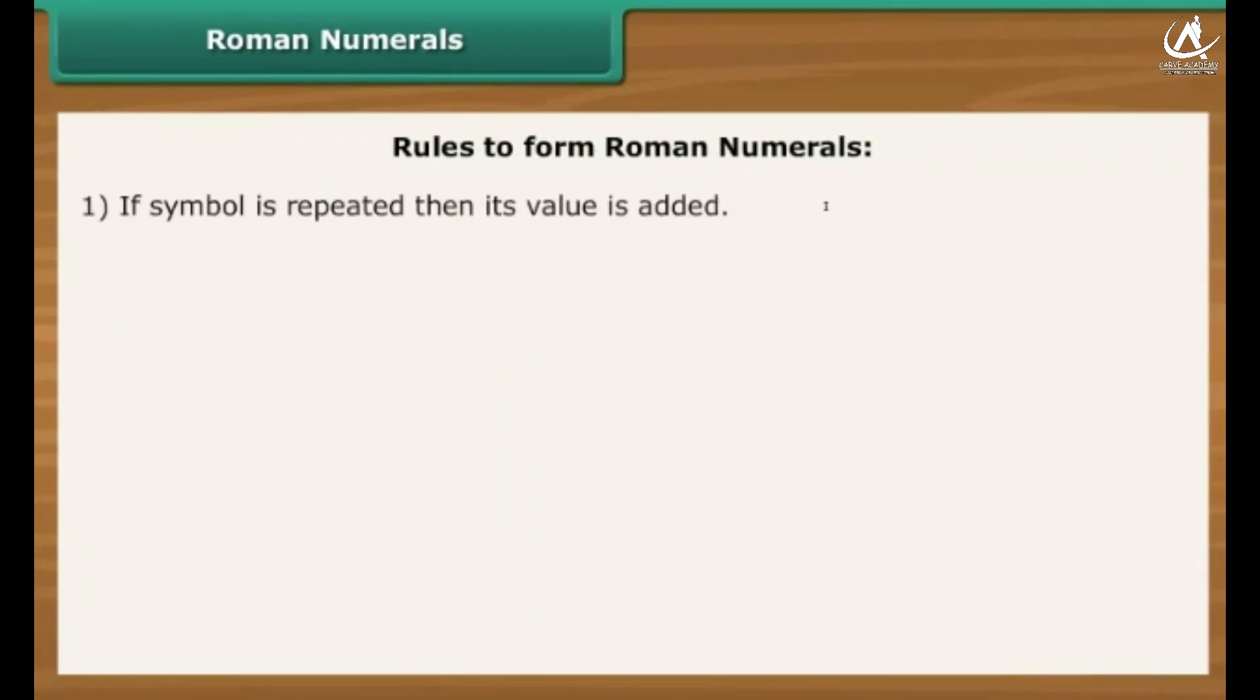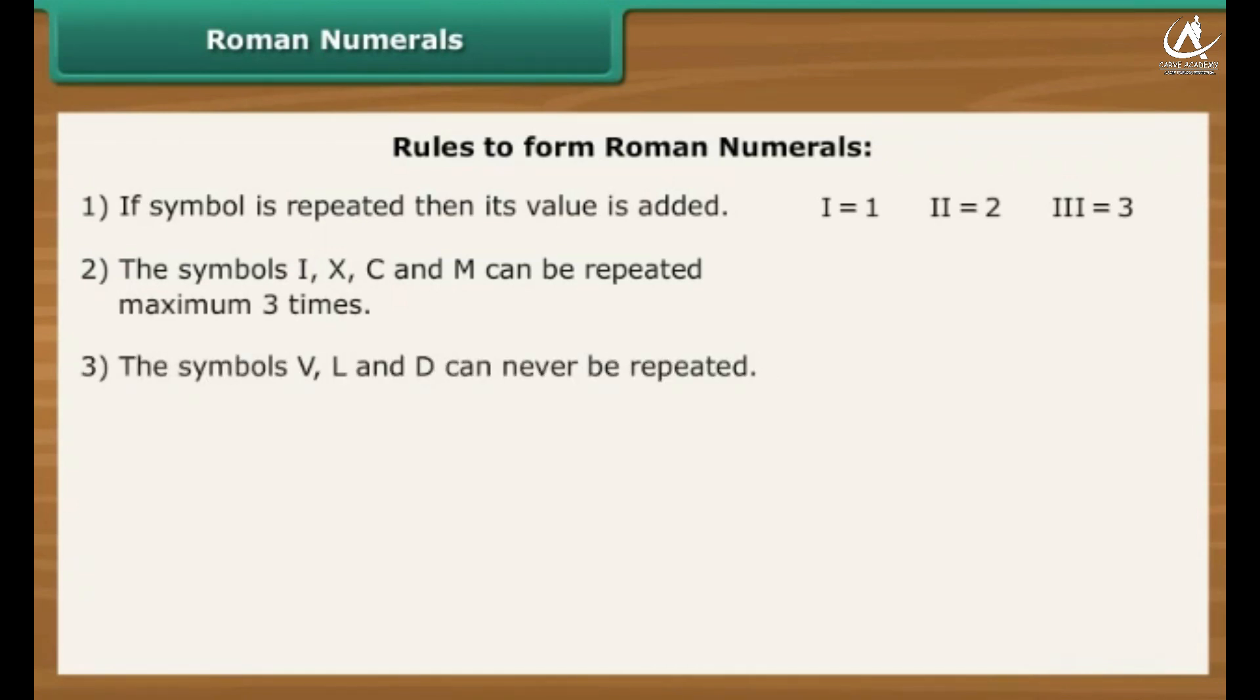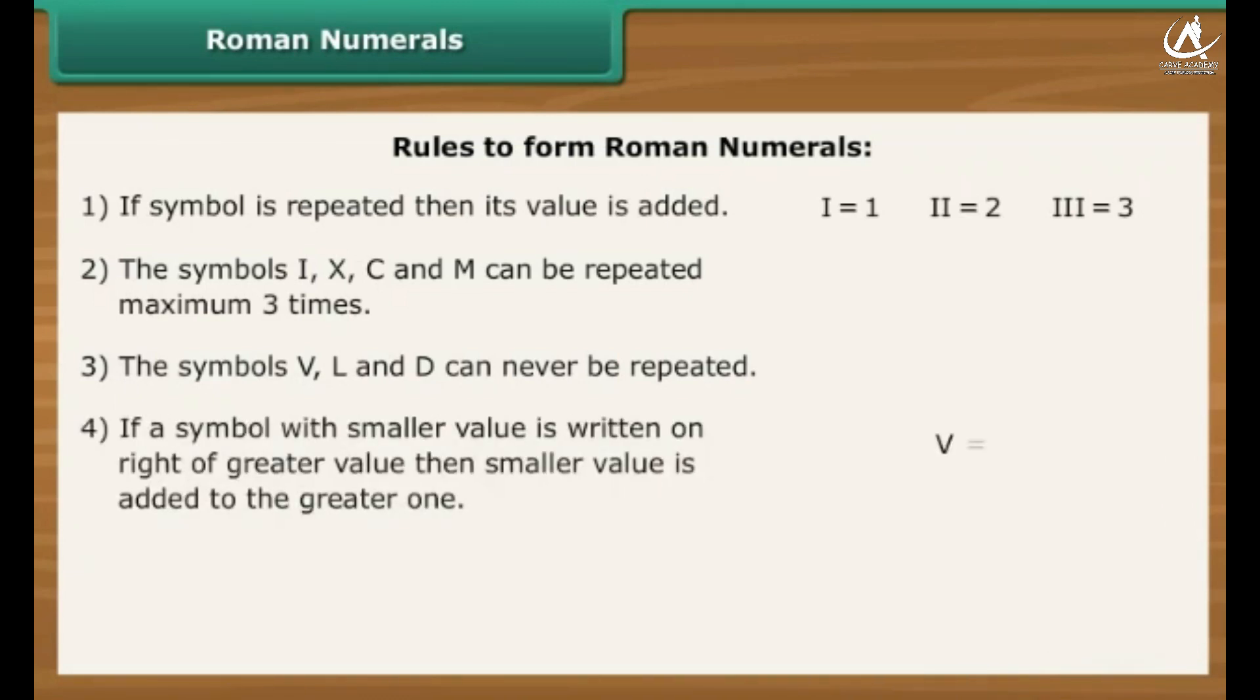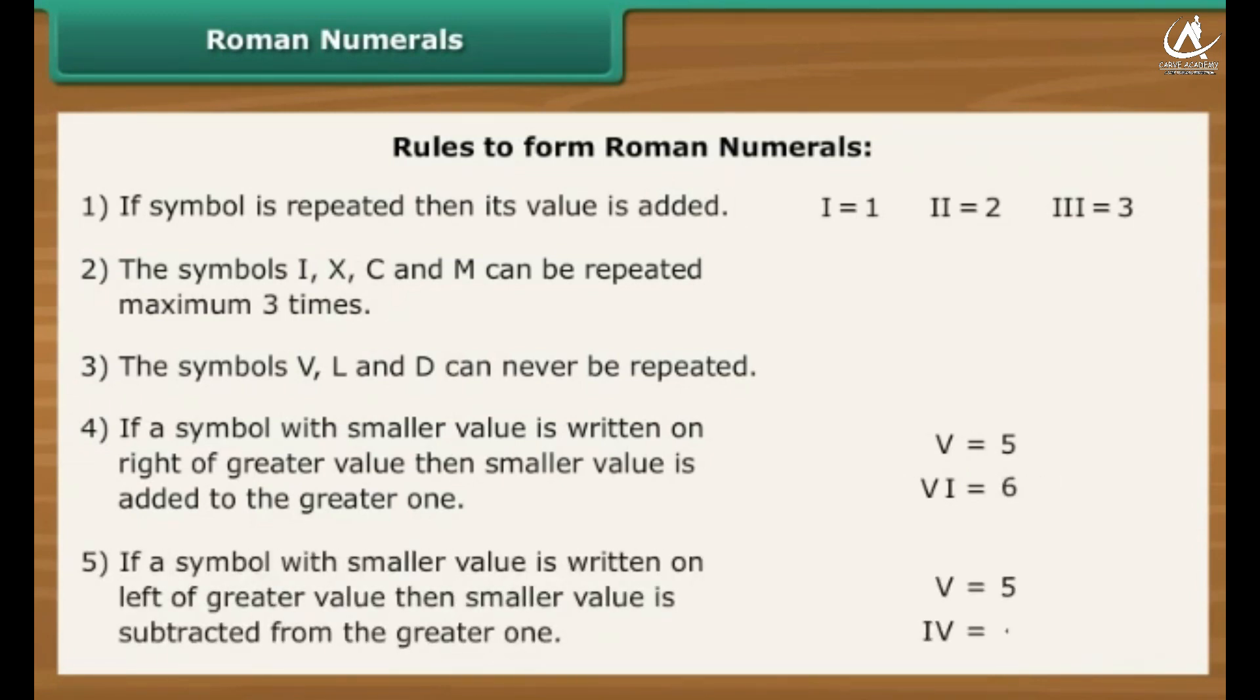There are certain rules to form Roman numerals. They are: 1. If symbol is repeated, then its value is added. 2. The symbols I, X, C and M can be repeated maximum three times. 3. The symbols V, L and D can never be repeated. 4. If a symbol with smaller value is written on right of greater value, then smaller value is added to the greater one. 5. If a symbol with smaller value is written on left of greater value, then smaller value is subtracted from the greater one.